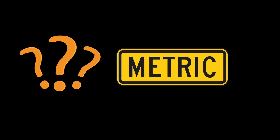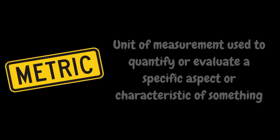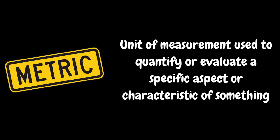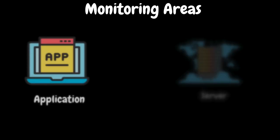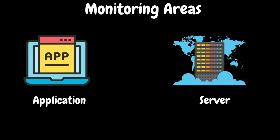So you must be thinking, what is a metric? A metric is a unit of measurement used to quantify or evaluate a specific aspect or characteristic of something. From the performance testing standpoint, monitoring will be done in two main areas: application and server. This is to identify any bottlenecks which impact application or server performance.